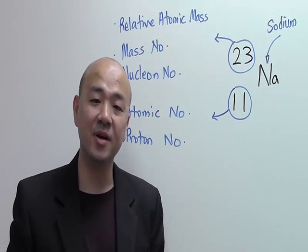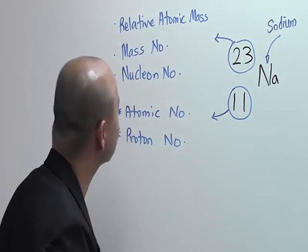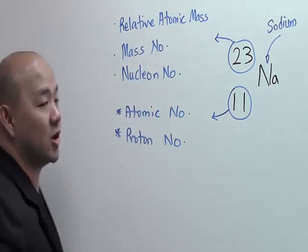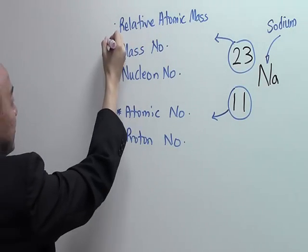Next, we would like to know the significance of each of the numbers you see here. The one on top, 23, the relative atomic mass, shows you a few pieces of information.